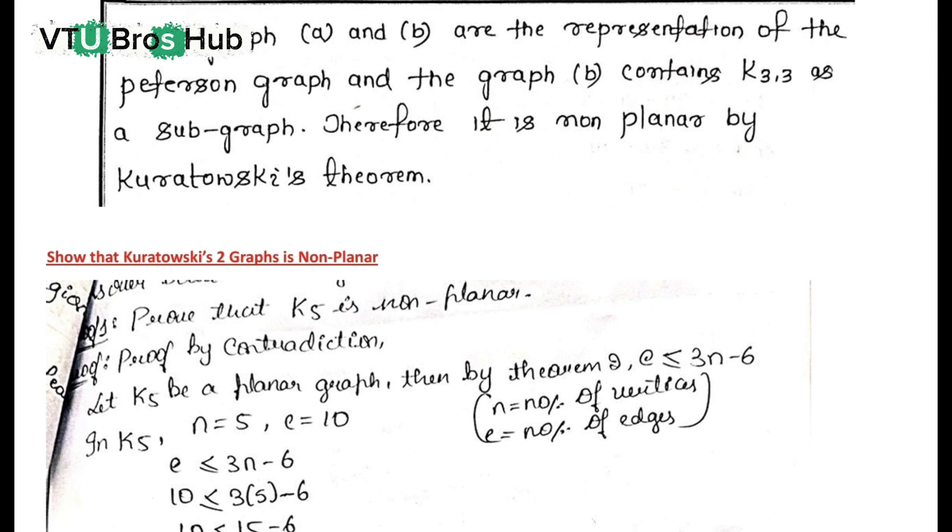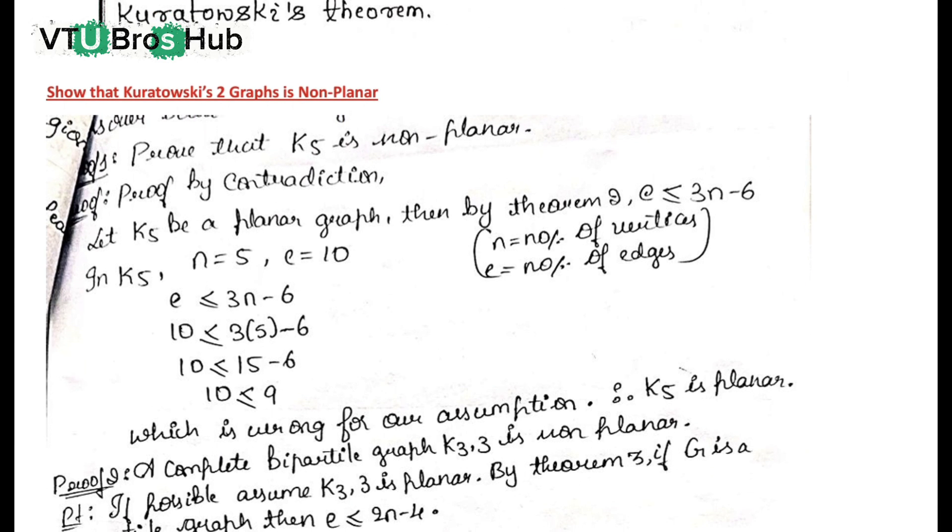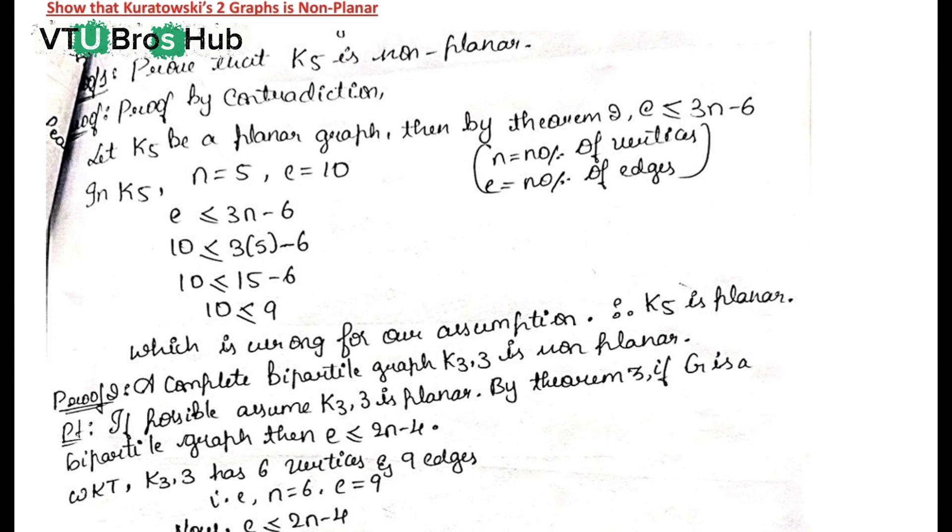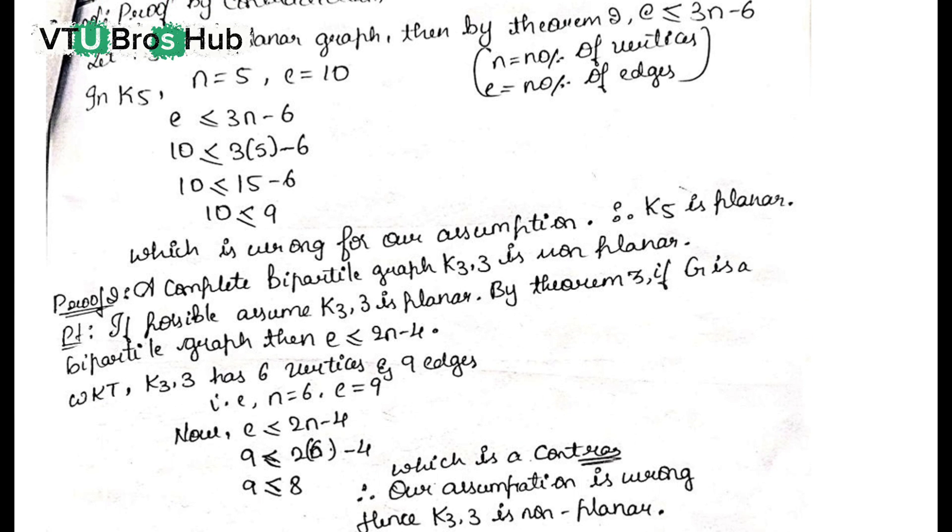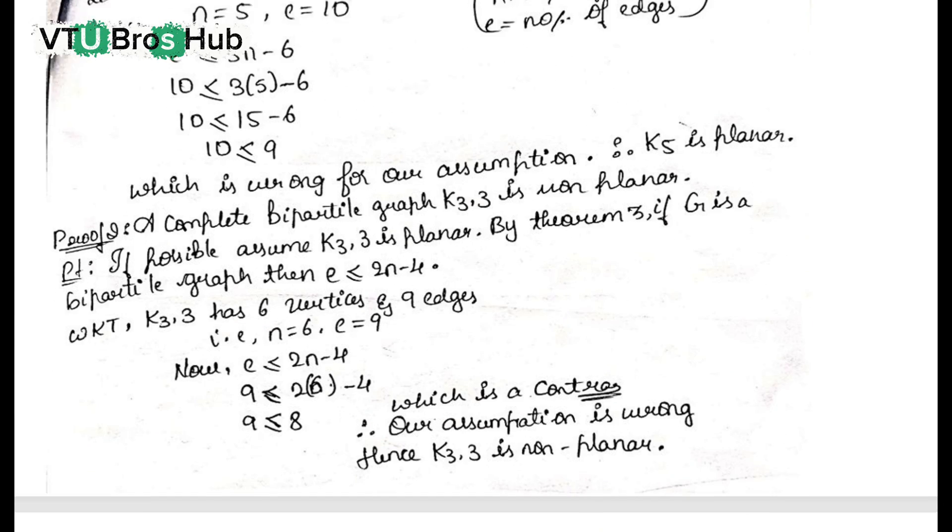Show that K5 and K3,3 are non-planar. Both K5 and K3,3 are non-planar graphs. You cannot draw them without edge crossings. Refer to the diagrams now shown on screen.